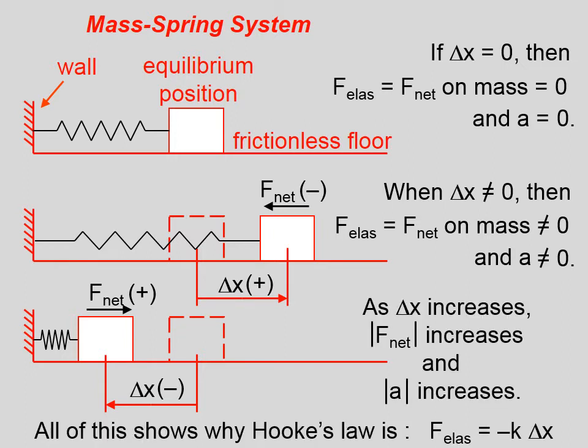All of this shows why Hooke's Law is often expressed in this way. The elastic force is equal to negative k times delta x, where k is called the spring constant or the force constant, and it is essentially the tightness of the spring. But that's why there's a negative sign here, because you can see that the displacement and the net force are always opposite in sign.